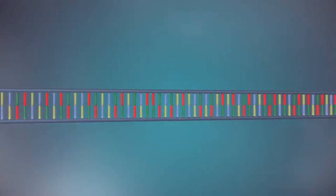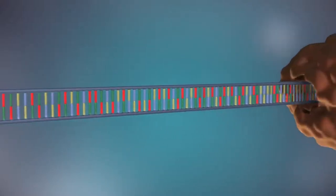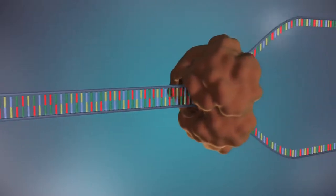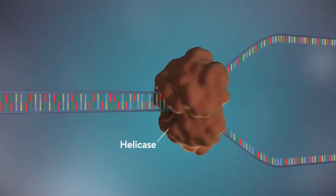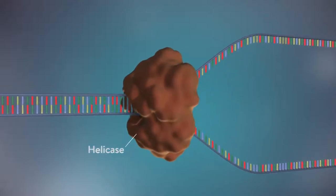The first step in DNA replication is to separate the two strands. This unzipping is done by an enzyme called helicase and results in the formation of a replication fork.